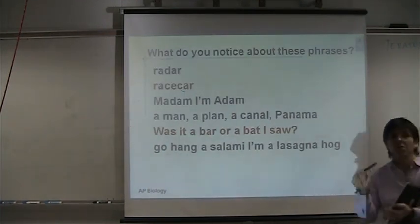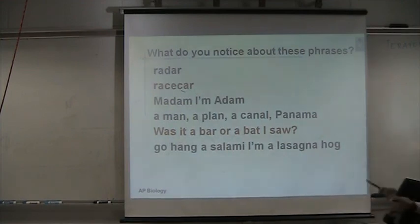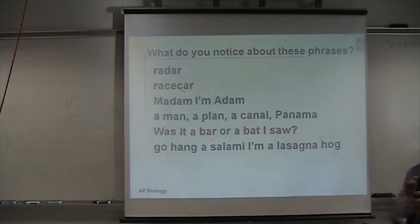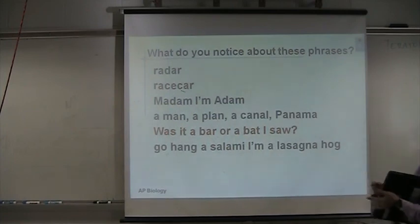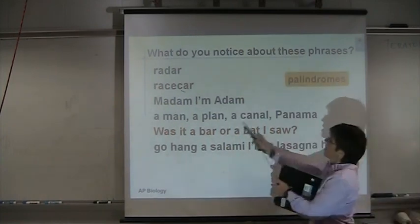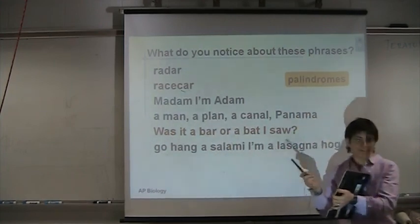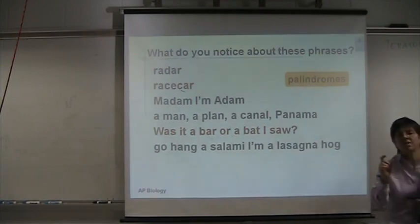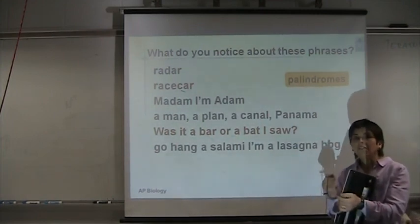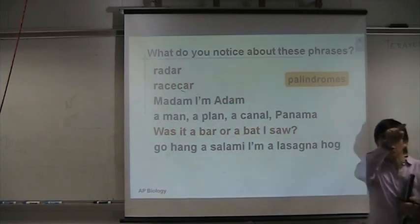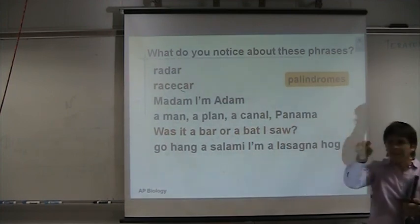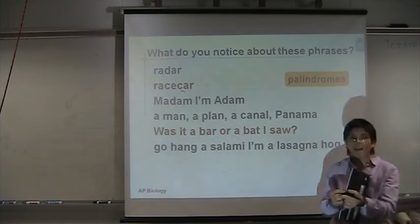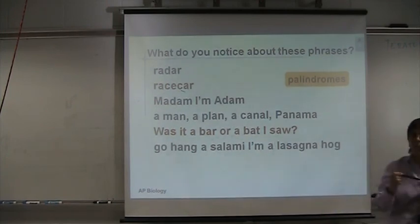How do restriction enzymes really work? Look at these words: radar, race car, madam, I'm Adam, a man, a plan, a canal, Panama. These are all palindromes — they read the same forward and backwards. The sequences recognized by restriction enzymes are all palindromes. If they read forward in one strand, they read the same in the other strand — three-prime to five-prime, and five-prime to three-prime.